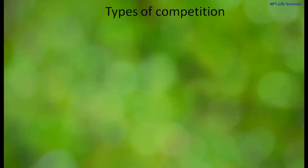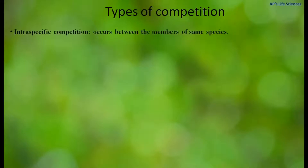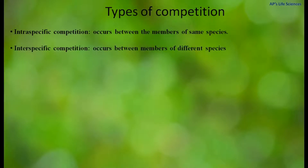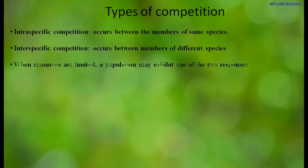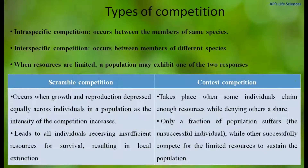There are different types of competition in the ecosystem — for example, intraspecific competition, which occurs between members of the same species. When resources are limited, a population may exhibit one of the following two types of response: scramble competition or contest competition.